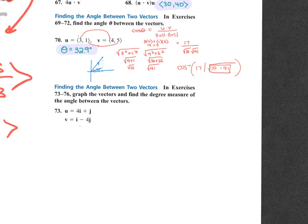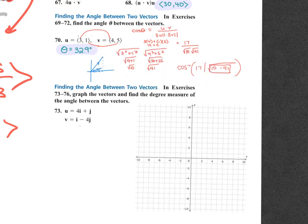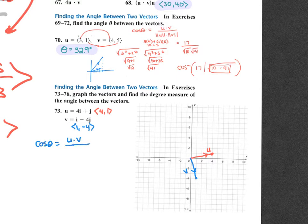Problem 73 says graph the vectors and find the degree measure of the angle between them. So if I had a number line, U would be 4, 1 — right 4 up 1. And V would be 1, negative 4 — right 1 down 4. Then cosine of theta equals U dot V over the magnitude of U times magnitude of V. The dot product: 4 times 1 plus 1 times negative 4 gives 4 plus negative 4, which is 0.